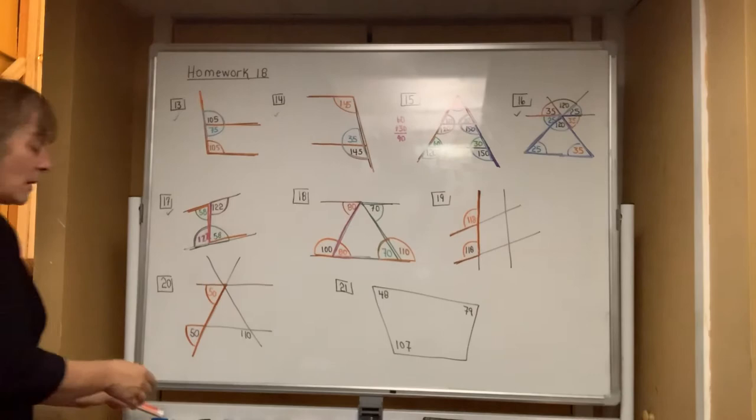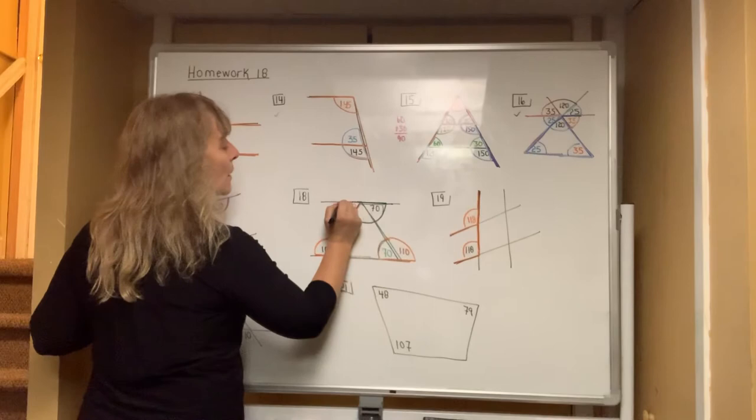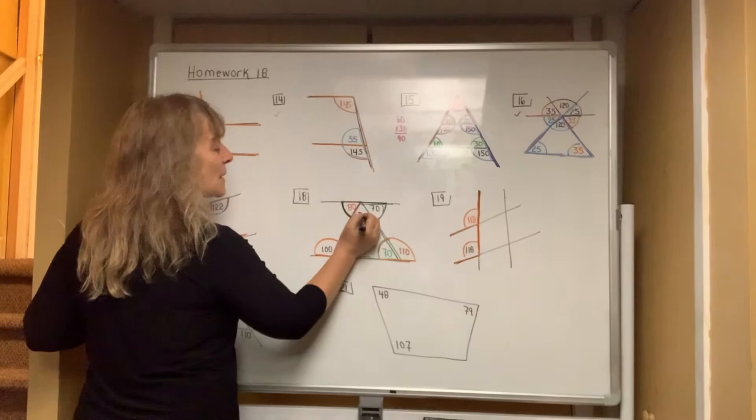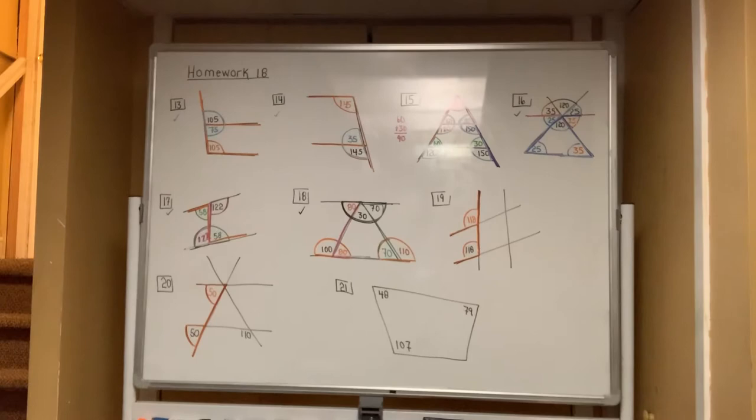Although you can look at the three angles of the triangle, you can also say there's a half circle up here. When you add 80 and 70, that's 150, so you're missing 30 more in the middle. You're completely done with number 18.